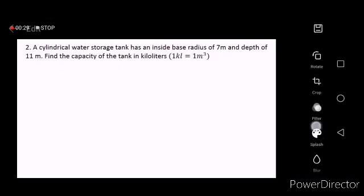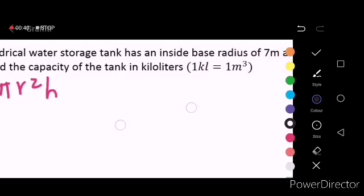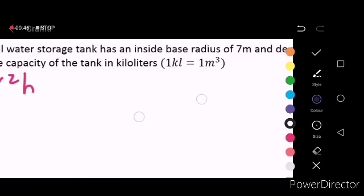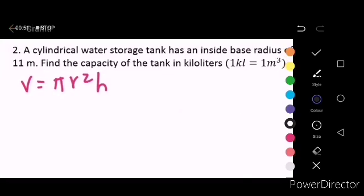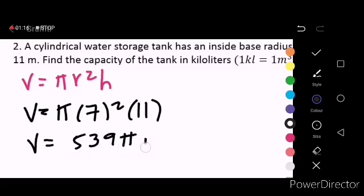Because all we need to do now is to use the formula for the volume, which is equal to πr²h. Do we have a value for the radius? Yes, it's given, that is 7 meters. Do we have a value for the height? Yes, it's 11 meters. The height here refers to the depth of the tank. So don't be confused. Therefore, the volume now is equal to πr², and the radius is 7 meters squared times 11 meters. The calculator will give you the value 539π cubic meters.